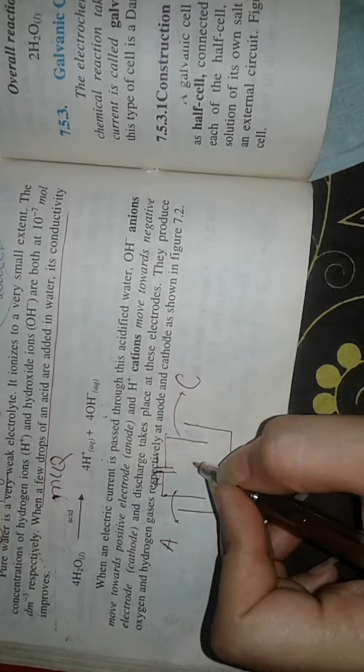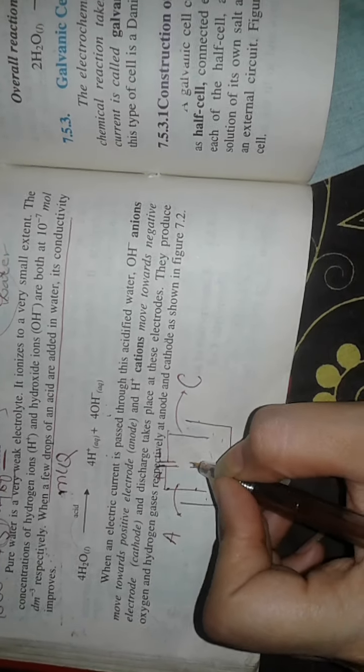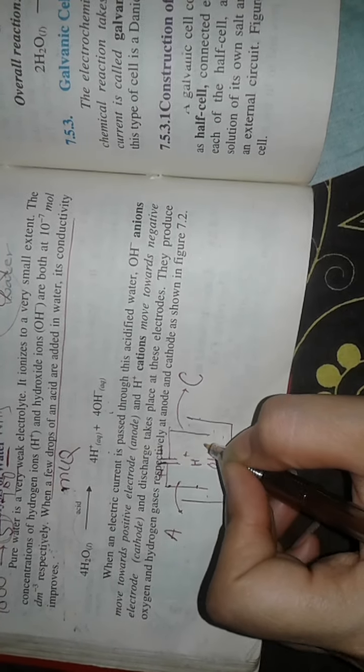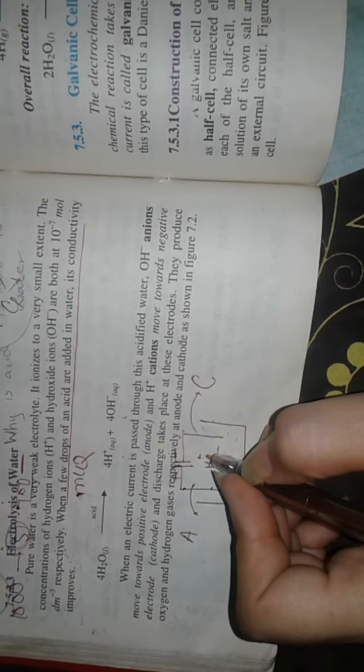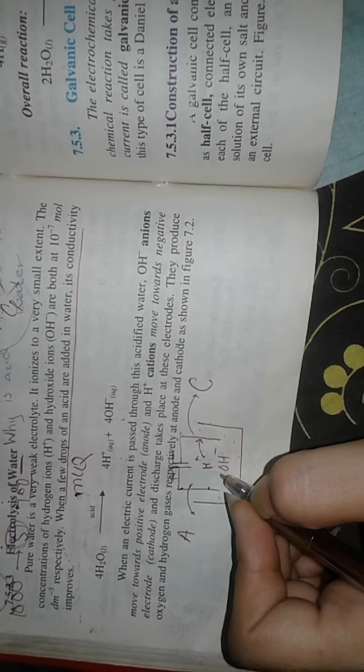The positive terminal is the anode and the negative terminal will be cathode. If I add water here, there are H positive ions and OH negative ions. H positive ions will go to the negative terminal.